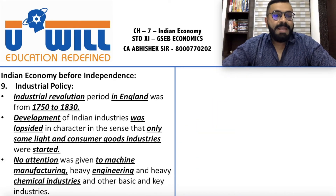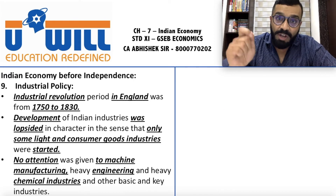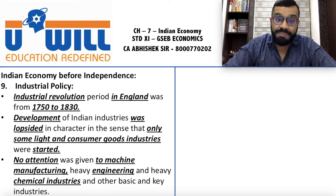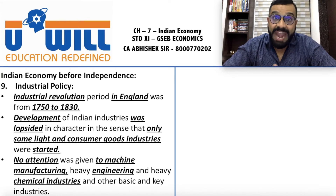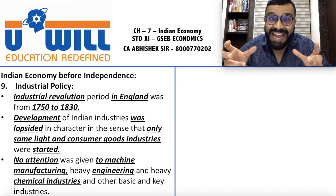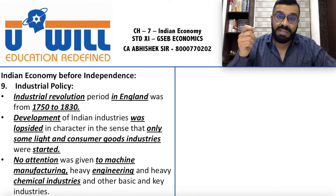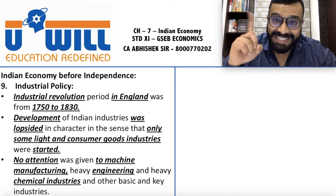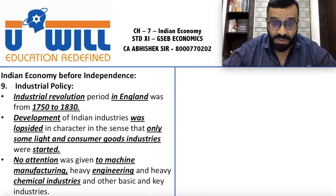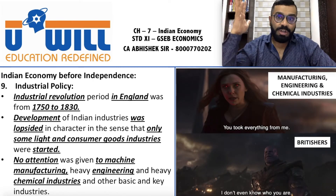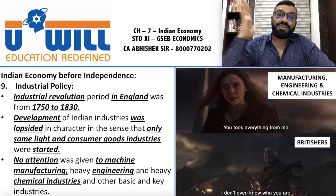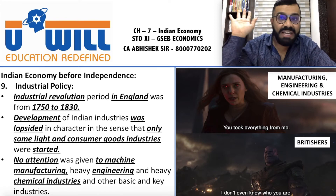Mismatch karwaya gaya jaanboojhke in resources ko — sare advantages hamare, saari dhoop hamare; raat tumhari, andhera tumhara, berozgaari tumhari, poverty tumhari. Is strategy se Britishers ne India ko treat kiya. No attention was given to machine manufacturing, heavy engineering and heavy chemical industries, and other basic and key industries — manufacturing, engineering aur chemical industries se sab kuch chhin liya.